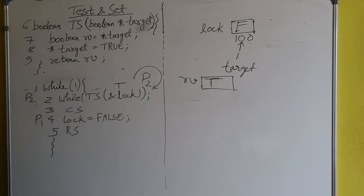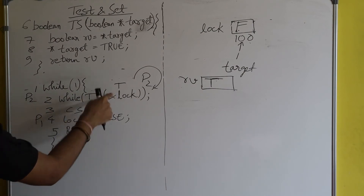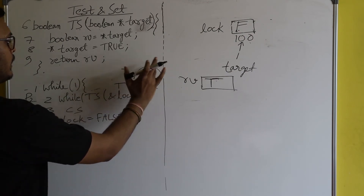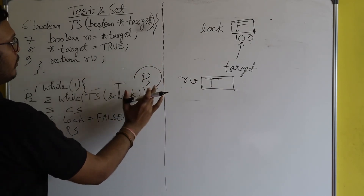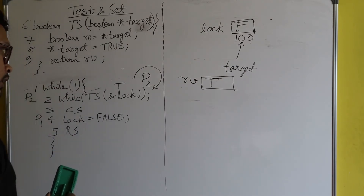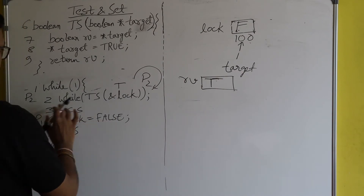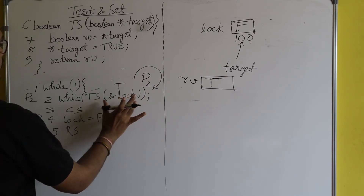P1 came out of the critical section after executing line four and moves to the remainder section. Now, since the lock value has become false, when P2's test-and-set function is called with &lock, let's see what happens.